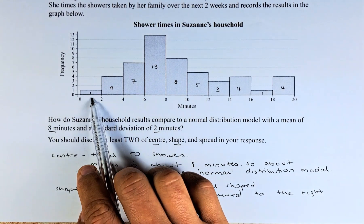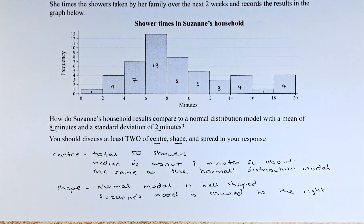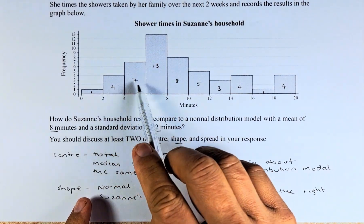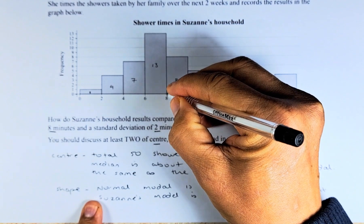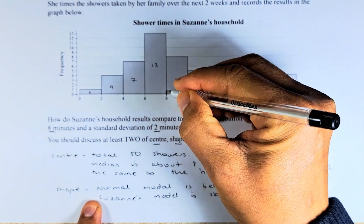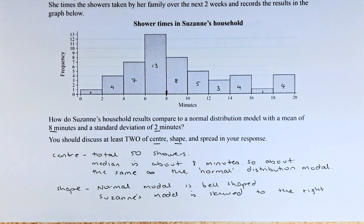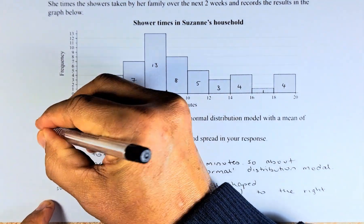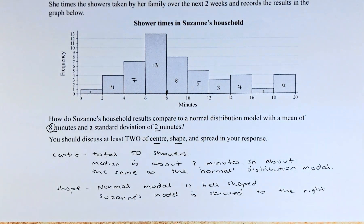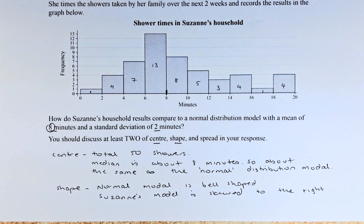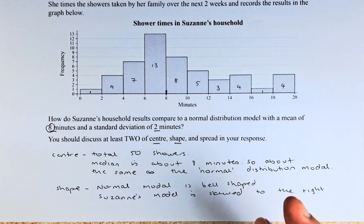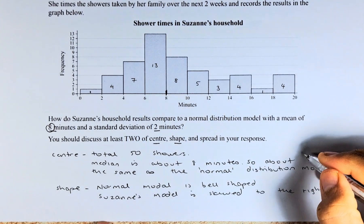If you add all these numbers, there are altogether 50 showers in total, so the median is in the middle. 1 plus 4 plus 7 plus 13 gives 25, so the middle number is going to be about 8. The median is about 8, which is about the same as the original amount — 8 minutes for New Zealanders with a standard deviation of 2. So you get the first point right.